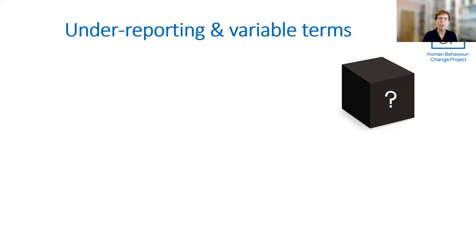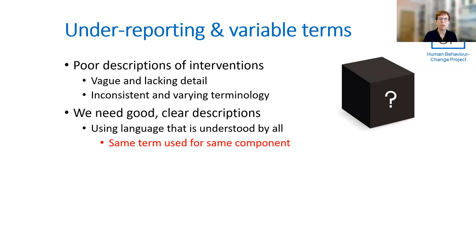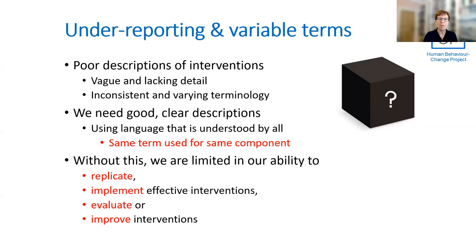We know that when we look at published descriptions, there's both under-reporting and variable terms — often vague and lacking in detail, with inconsistent terminology. So we need good, clear descriptions using language that is understood by all, with the same term used for the same component. Without this, we're limited in our ability to replicate, implement those interventions that are effective, evaluate interventions, and improve interventions.